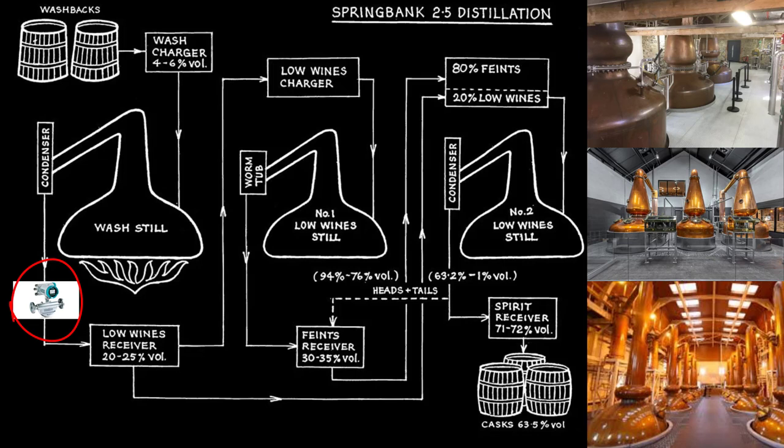We can put a measurement in here that measures the alcohol by volume, and we want to cut it. That's conventionally done with a floating device called a hydrometer, which tells you the alcohol content. That will switch over and take this 20 to 25 percent cut and store it into the low wines storage.